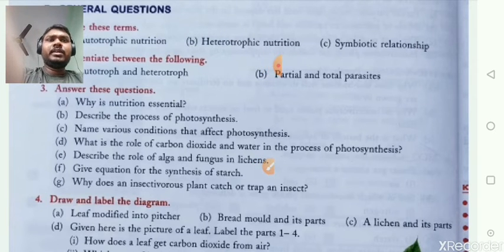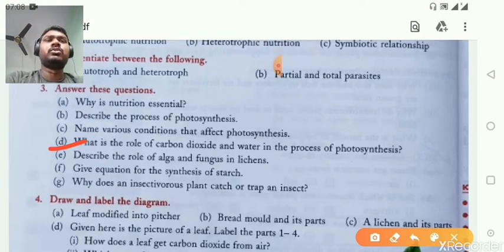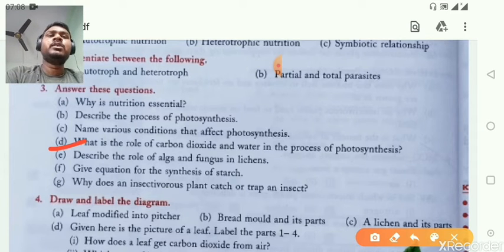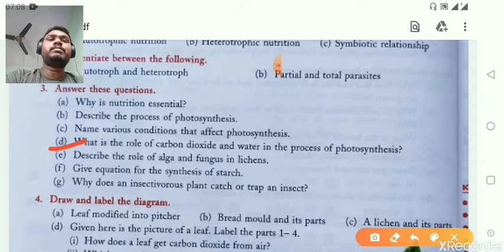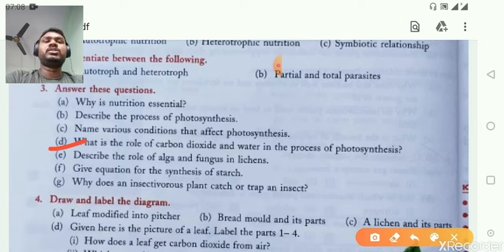What is the role of carbon dioxide and water in the process of photosynthesis? Carbon dioxide and water are essential raw materials for photosynthesis.